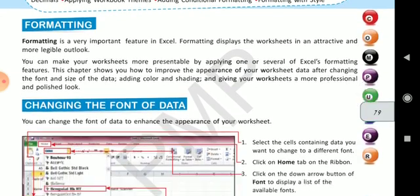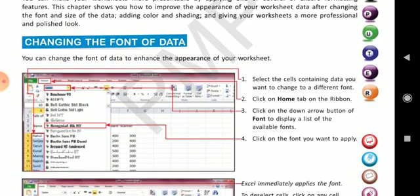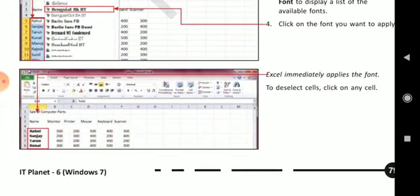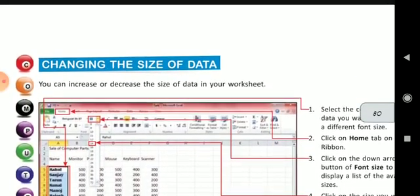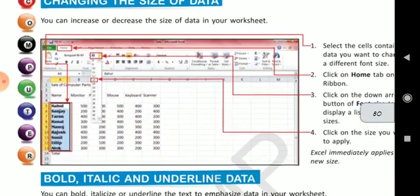In this chapter, changing the font of data — you can change your font also. There are different fonts given. With the help of that you can change the font of the text in the cell. You have also studied about changing the size of the data — how you can change the size of your data from smaller to bigger, starting from 8 to 12, 16, 24. This also you can do in your formatting.